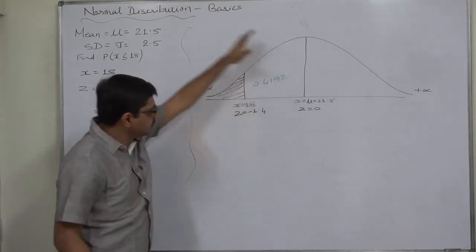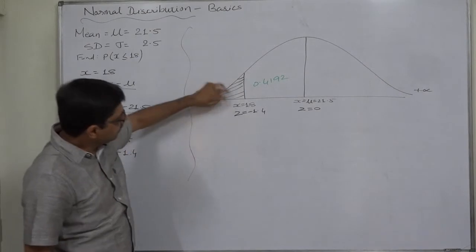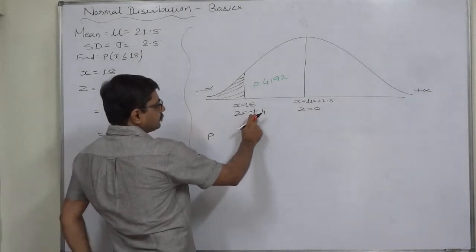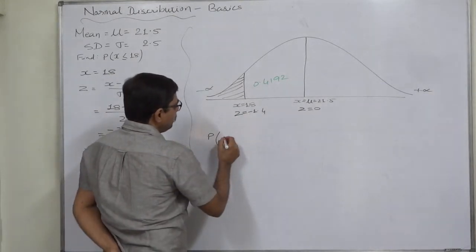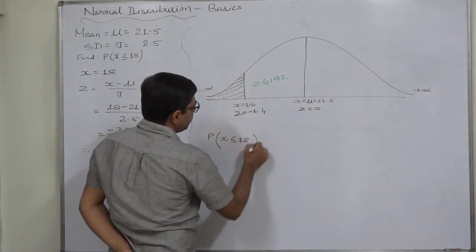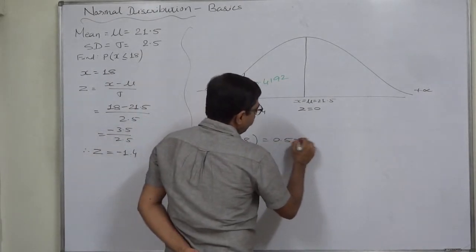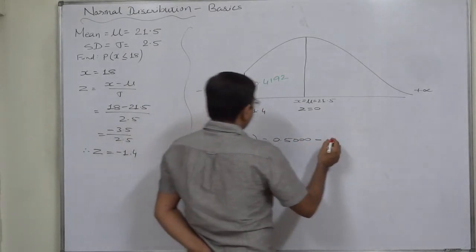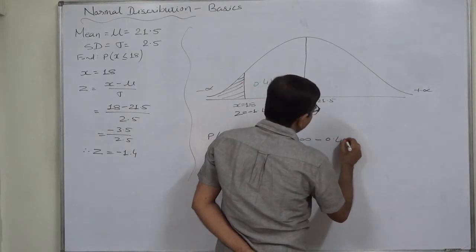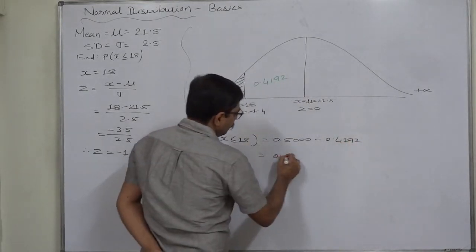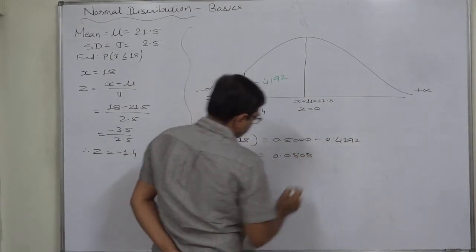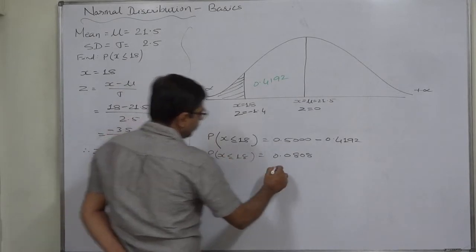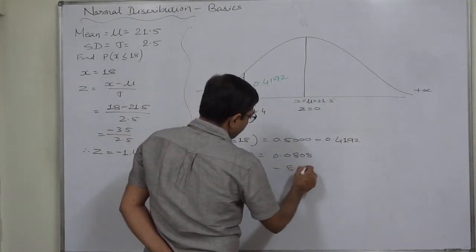So if we subtract this area from 0.5, the remaining area is of this region. So the area after z minus 1.4, or the probability of x taking value less than or equal to 18, is 0.5, the area of entire left hand side of the normal curve, minus 0.4192. So it comes to 0.0808. This is the probability of x taking value 18 or less, that is something 8.08 percent.